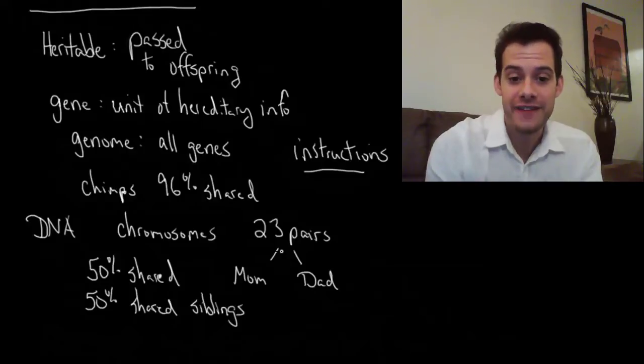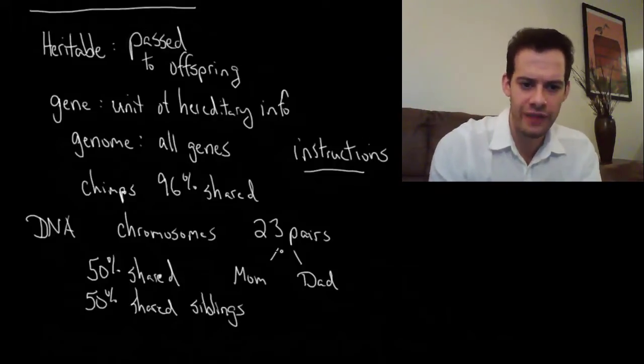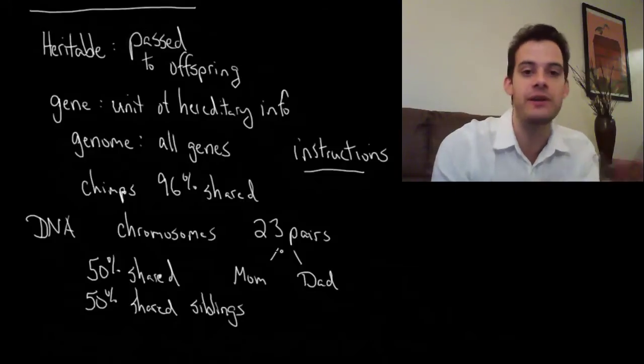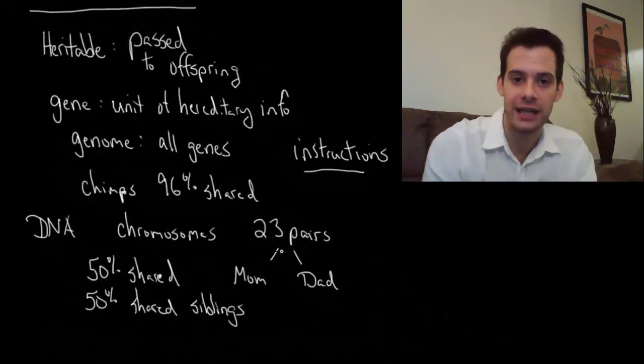On average 50% of the time of those four possible scenarios two of them are the same where you both get mom's version or you both get dad's version. That is why we say that 50% of the time you're going to have 50% shared genes with your sibling. It's not exactly 50%. It could end up being slightly more or slightly less but that's an average.